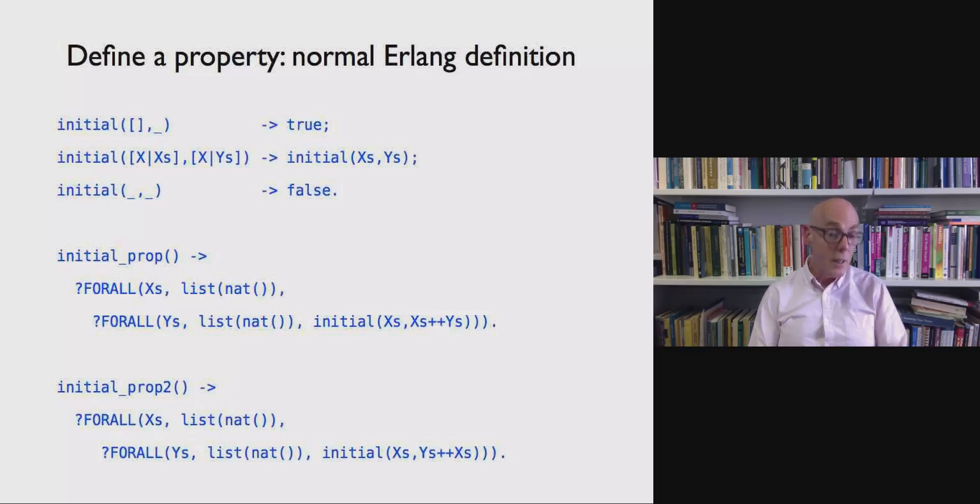Often we have to, the nice thing about QuickCheck is that you define properties in Erlang itself. So what I'm doing at the top of the slide is to define when one list is an initial segment of another. I'm saying the empty list is an initial segment of any list. X cons X's is an initial segment of X cons Y's if X's is an initial segment of Y's. And otherwise the answer is false.